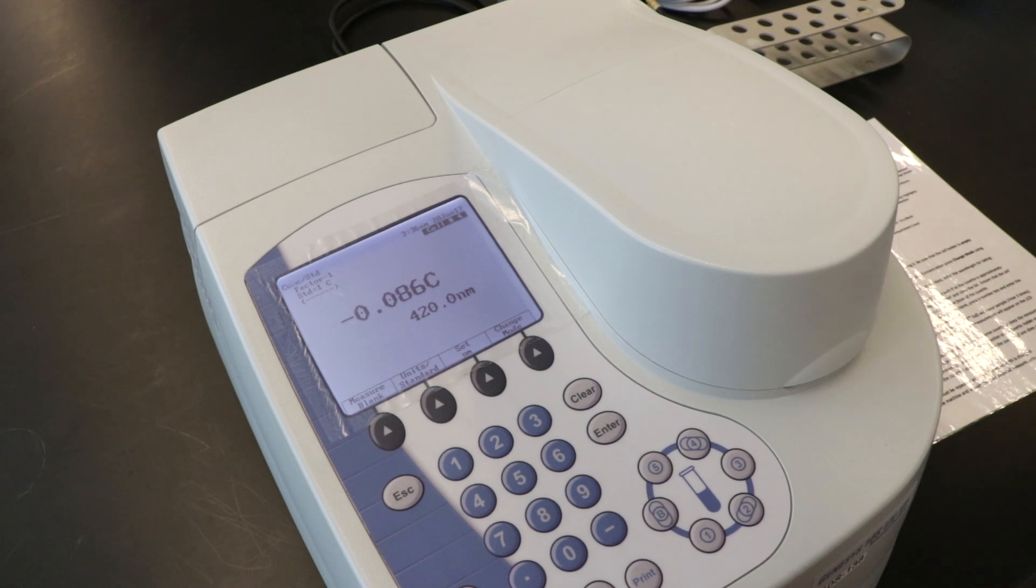In your notebook, record the value for absorbance if you're using a digital spectrophotometer or percent transmittance if you're using an analog spectrophotometer. Repeat this process for flasks 2, 3, 4, and U.